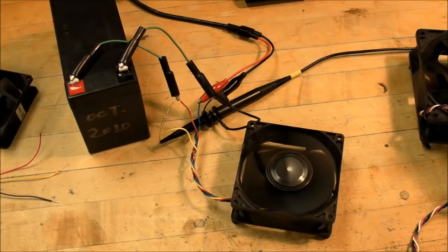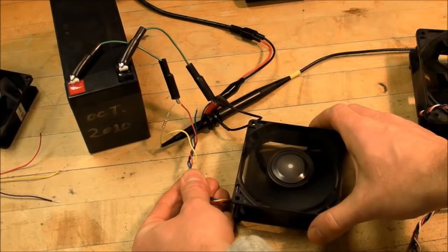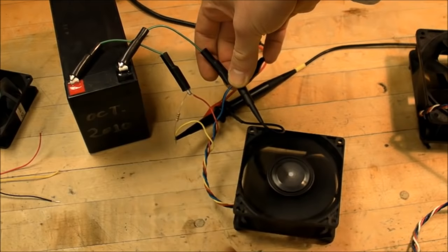So if I disconnect the function generator and I leave the blue wire floating, you can see the fan really speeds up there. And if I tie the blue wire to ground, it goes to minimum speed.